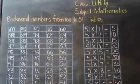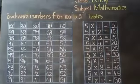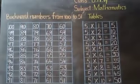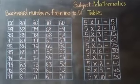In the previous class, we have learned backward numbers from 50 to 1 and the tables of 4.